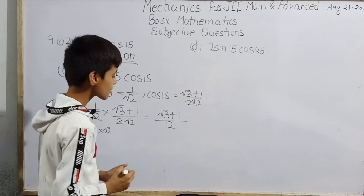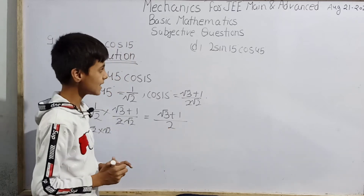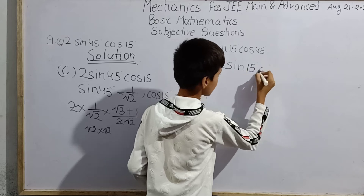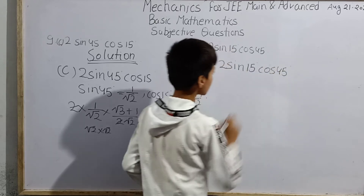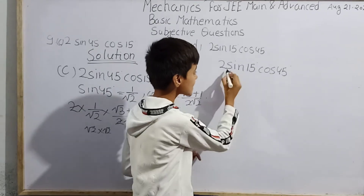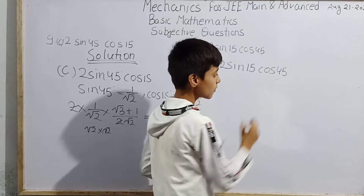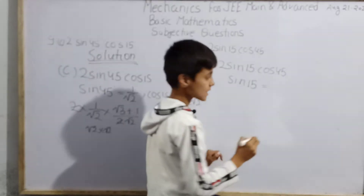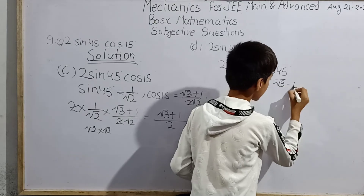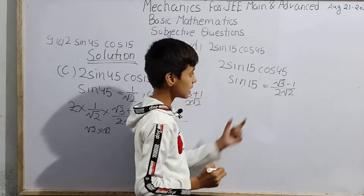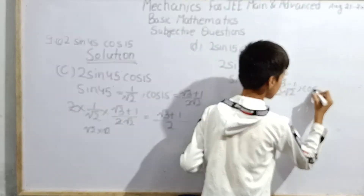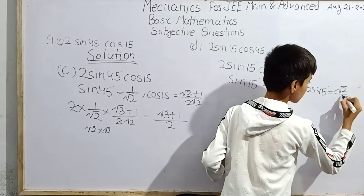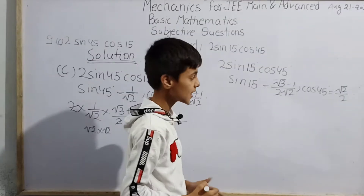So the answer for C is (√3 + 1)/2. Now we'll solve D. We have 2·sin15°·cos45°. The value of sin15° is (√3 − 1)/(2√2), and the value of cos45° is √2/2.